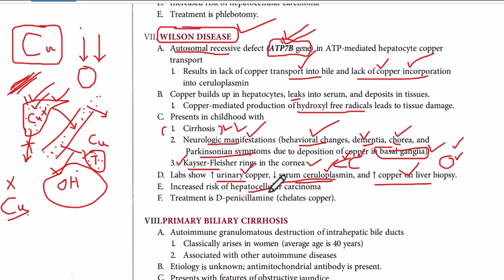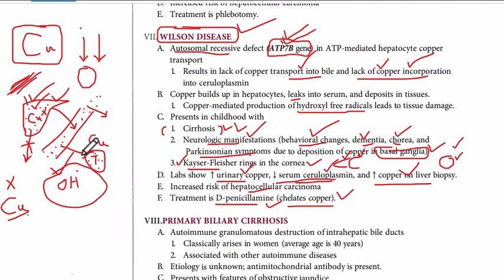Cirrhosis can ultimately result in hepatocellular carcinoma. The treatment is penicillamine, which chelates the copper — it forms complexes with copper and results in the removal of copper from the body. This was the basic concept of Wilson disease.